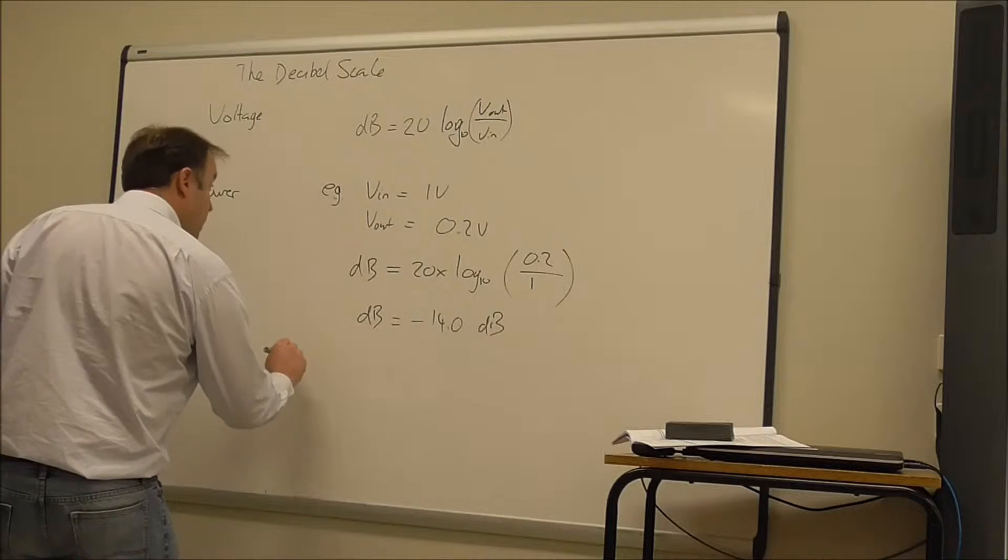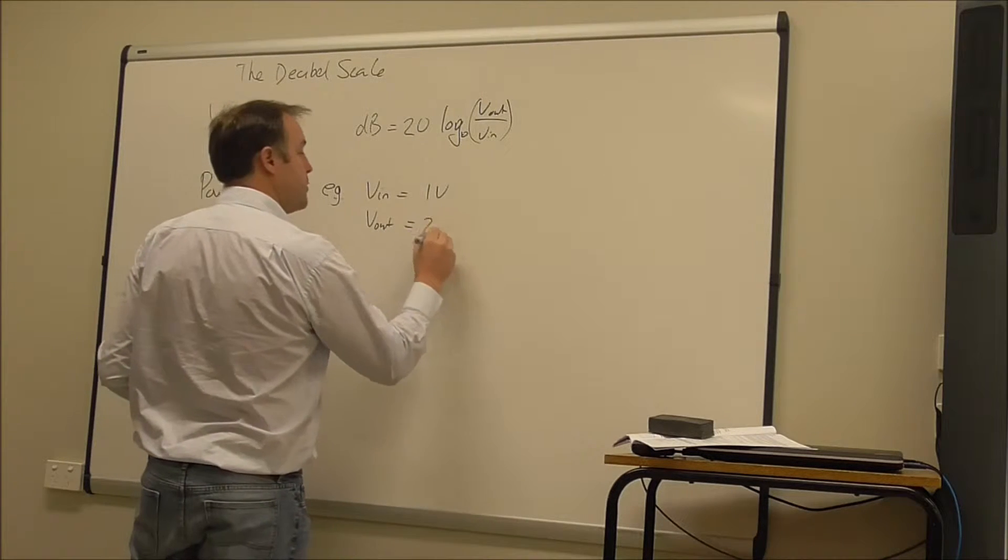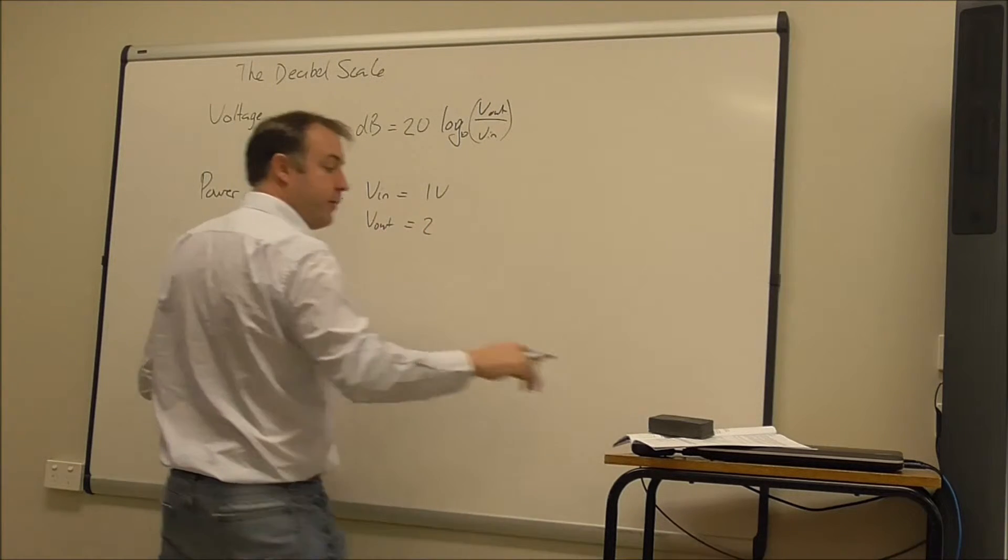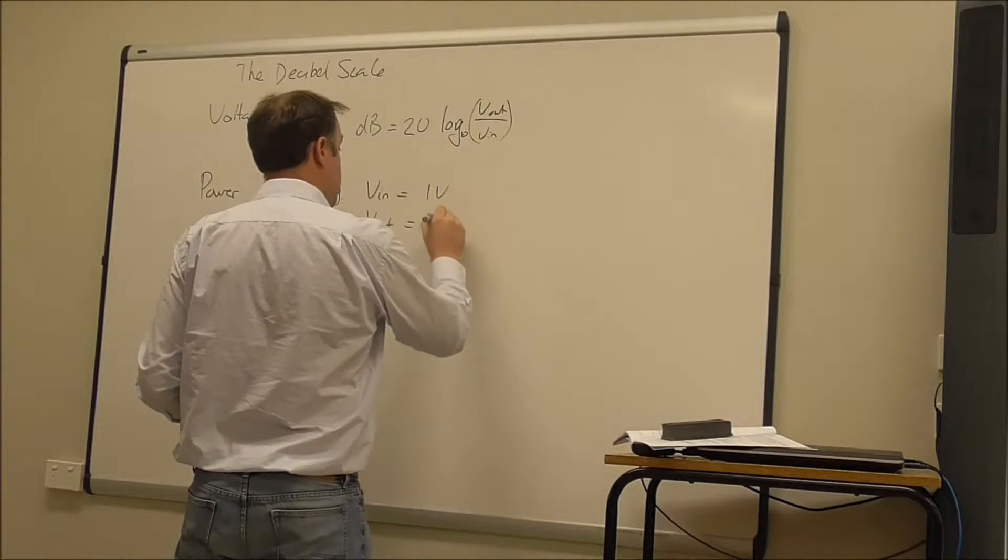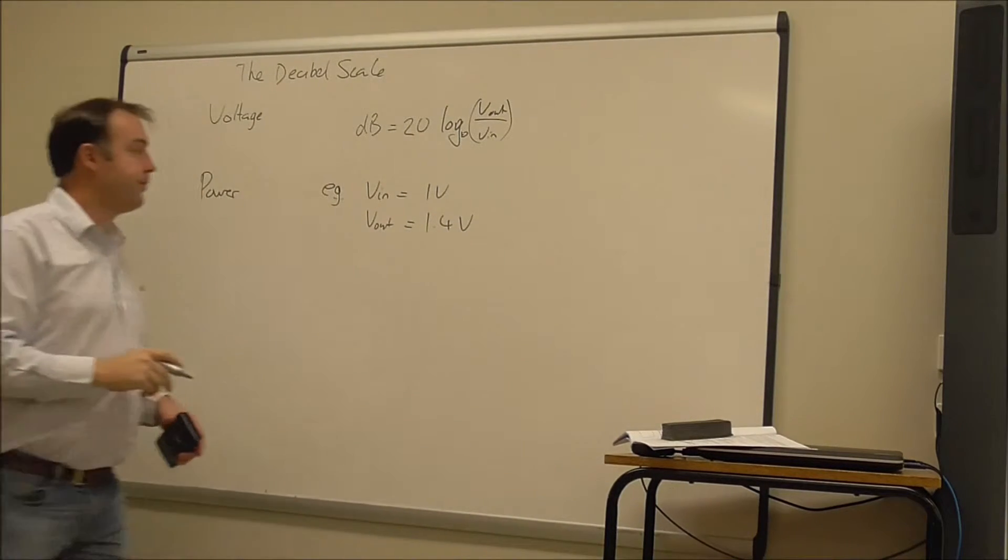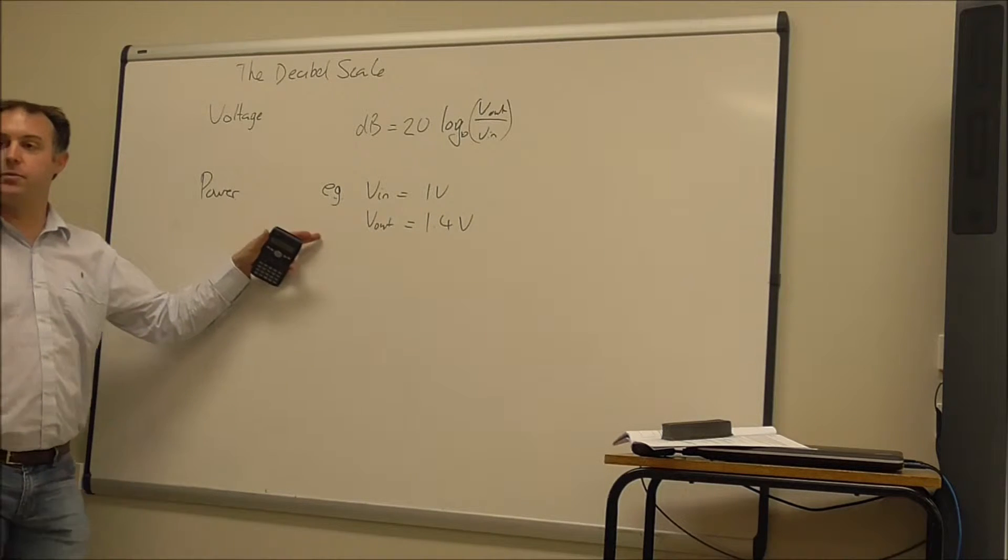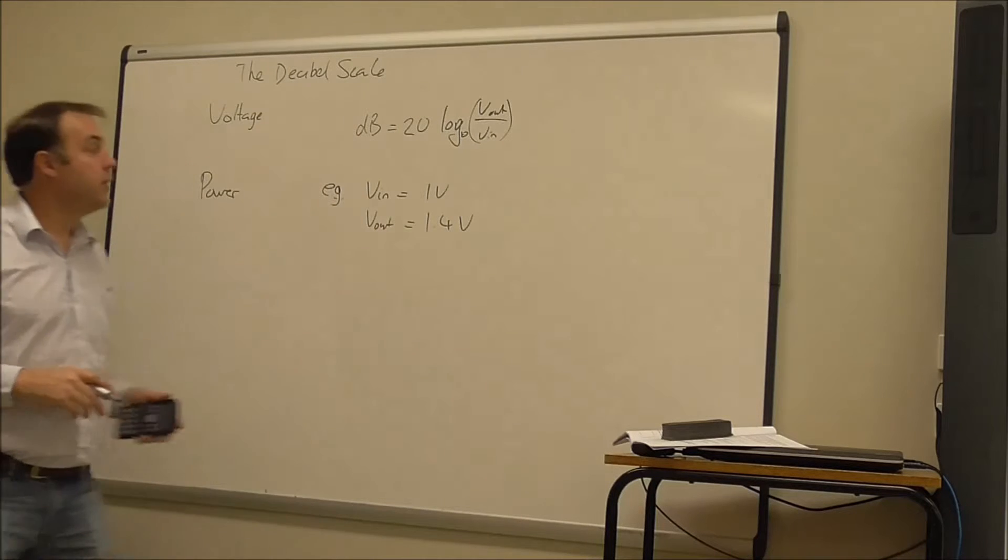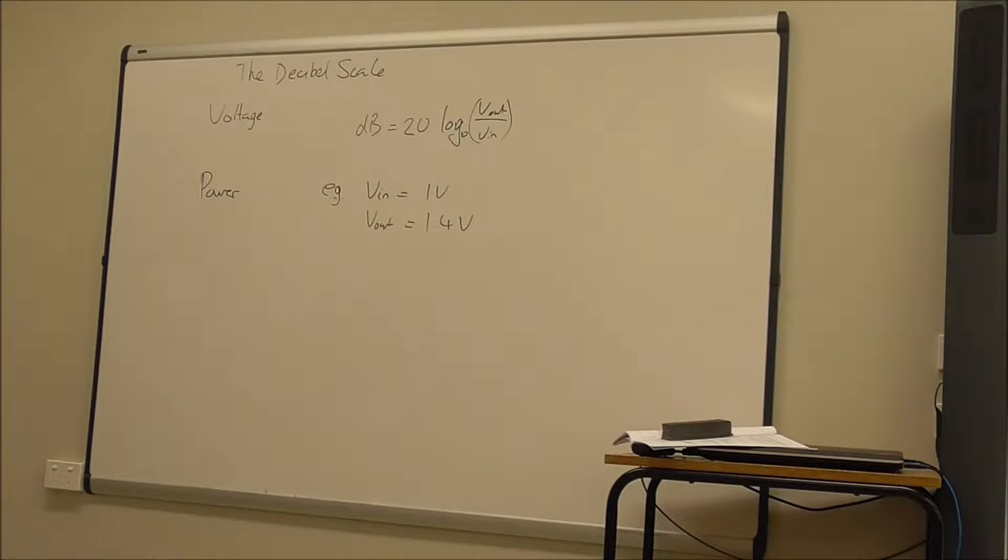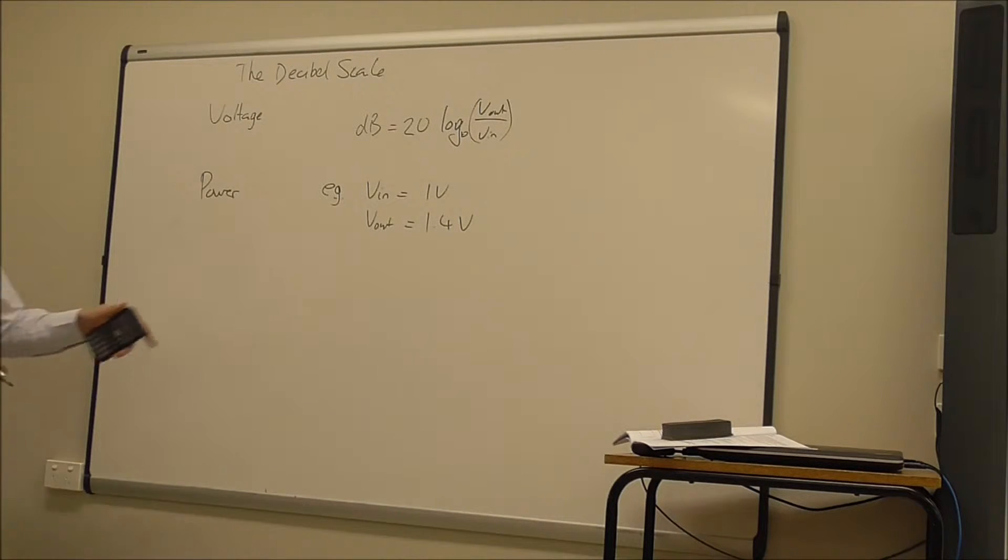Let's look at another one here. So if I had an output of 1.4 volts. So my output now is bigger. So this has been the output of an amplifier, say, or an active filter. We haven't looked at it yet, but we will soon. Then I can calculate the dB.